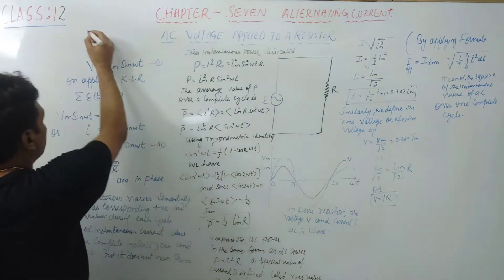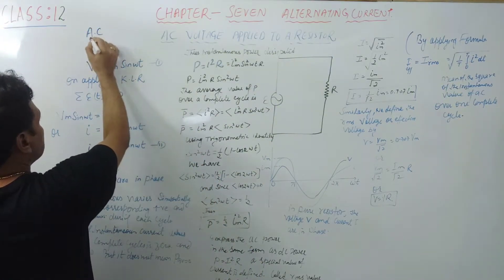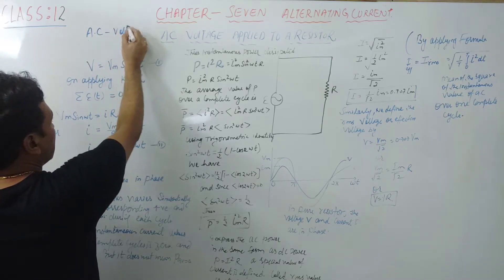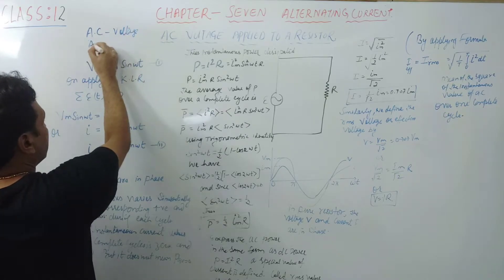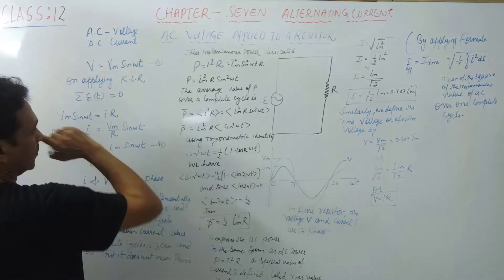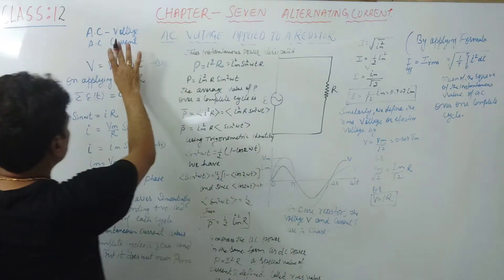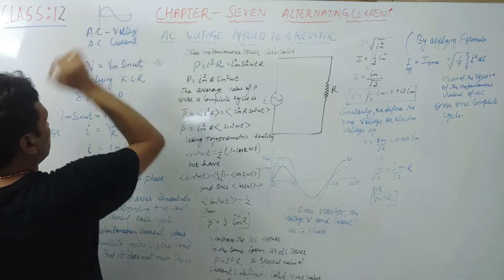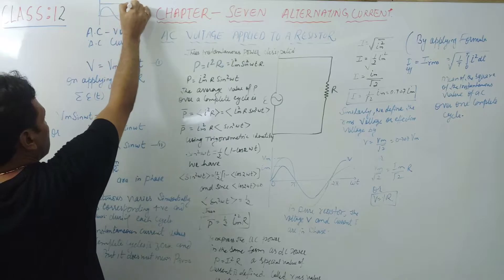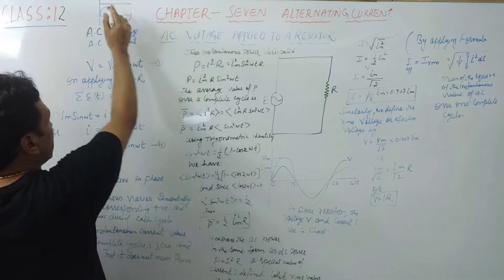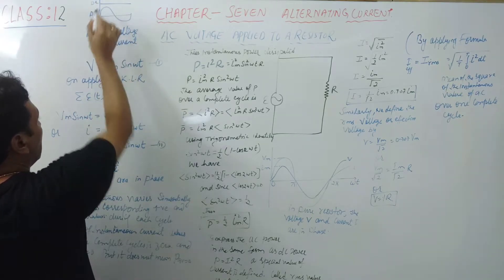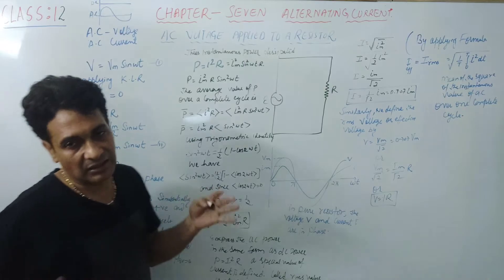The word AC is very confusing for students. AC means alternating current — AC voltage and AC current, alternating voltage and alternating current. Alternating voltage means voltage changes with respect to time. If we talk about direct current, its frequency remains constant. This is the direct current variation with respect to time, and this is the variation of alternating voltage or alternating current with respect to time.